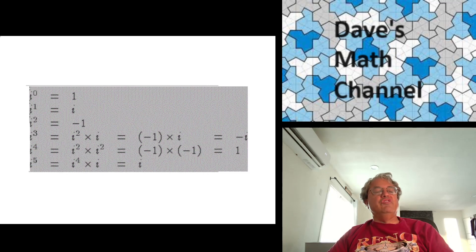And the fifth power, we have i to the fourth times i, and i to the fourth we said was 1. We get back to i. And you can see that if you keep continuing this, you'll get a periodic sequence with a period of 4. Every fourth power of i is equal to 1. And that's kind of nice.